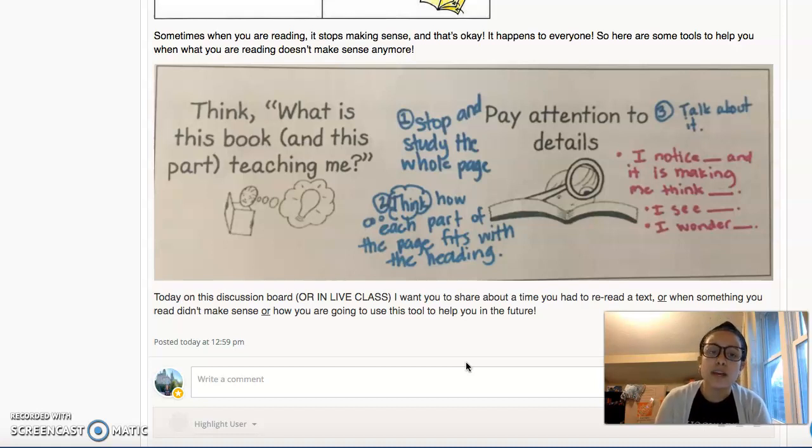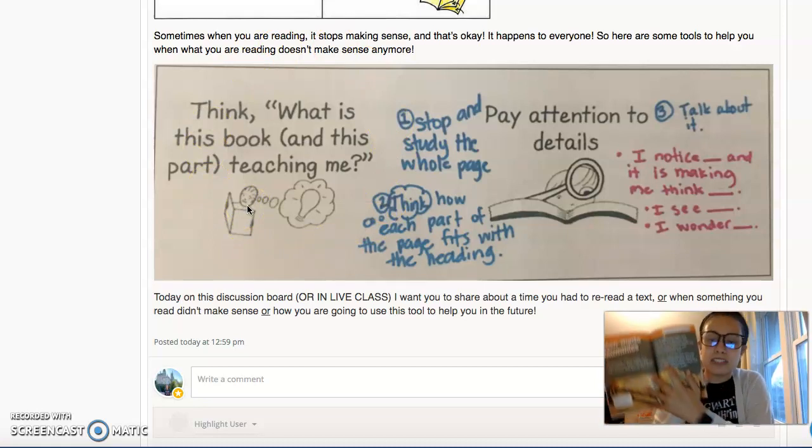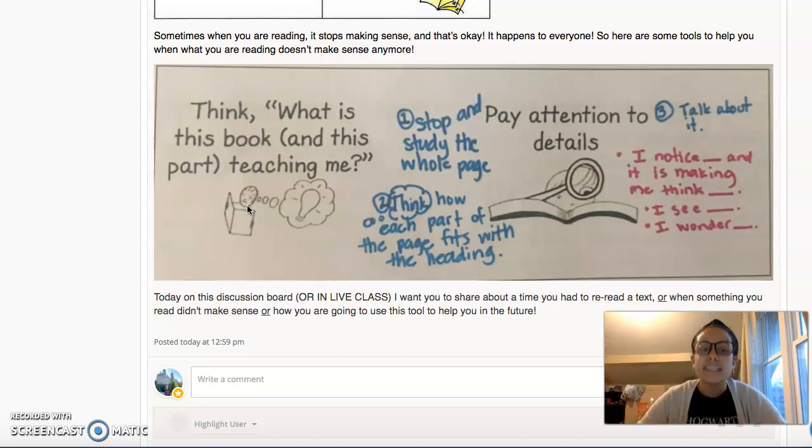And so a tool that you could do, and some thinking work is to think to yourself, what is this book? What is this part? What is this one area? When I'm looking at this book, Mummies, and I'm wondering about the different cultures in this one paragraph, I asked myself, what is it trying to teach me?